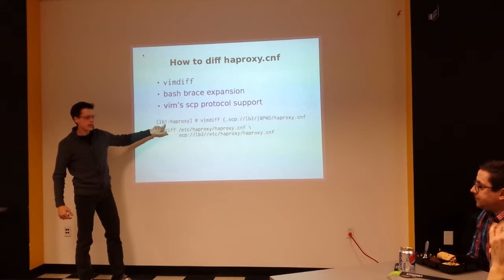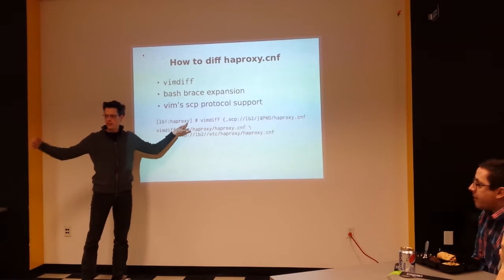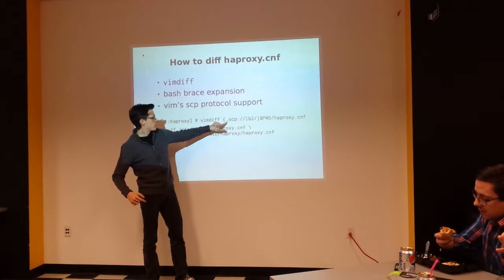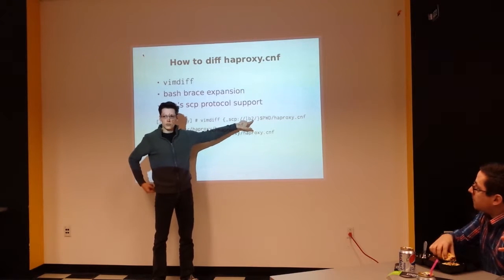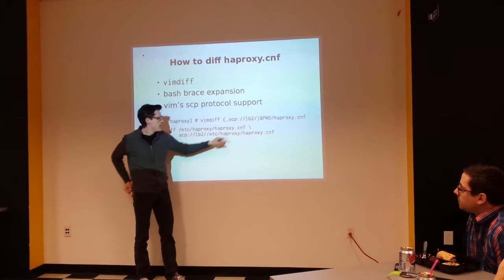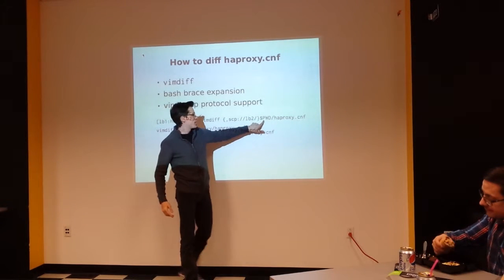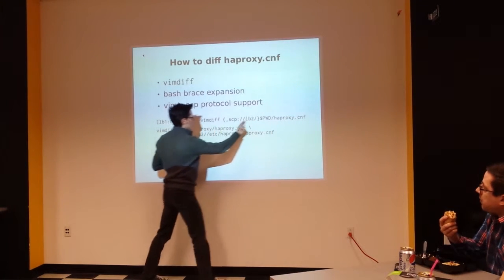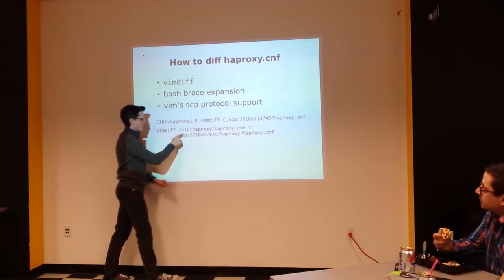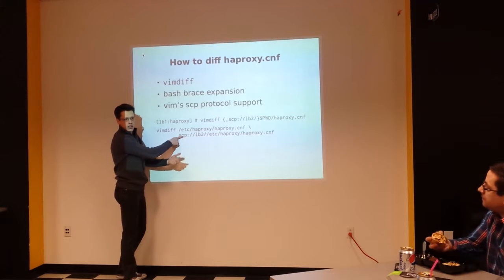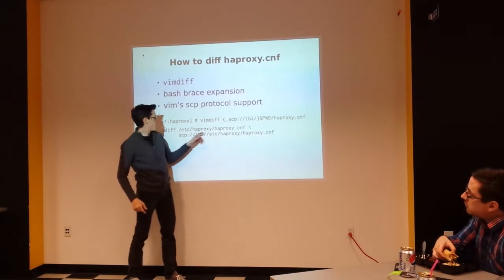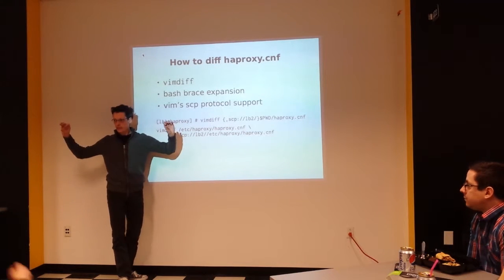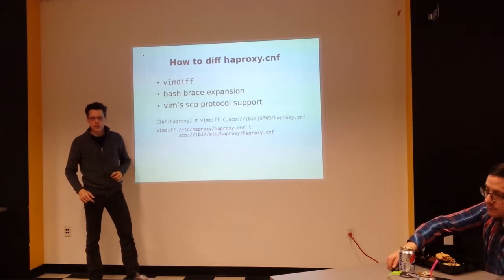Let's say I'm on LB1 in the HAProxy /etc/haproxy directory. I call VimDiff with a brace expansion: an opening brace, nothing, a comma, then SCP and LB2's IP address. Then the current working directory and haproxy.conf. This expands twice — once with nothing (the local file) and a second time with the IP address and hostname of LB2, giving the path to the file I want to edit. So I end up calling VimDiff with both file names.